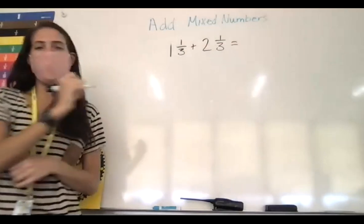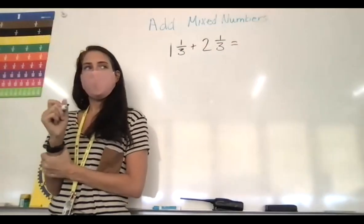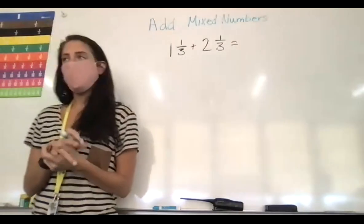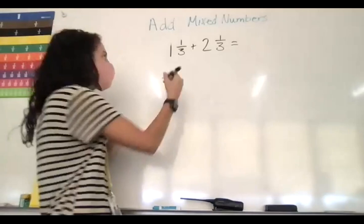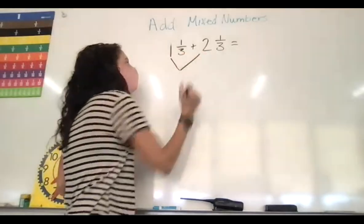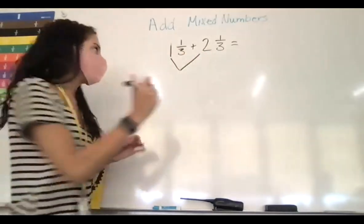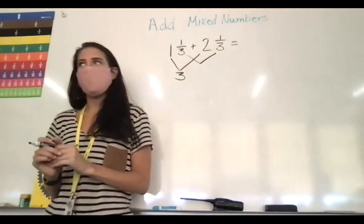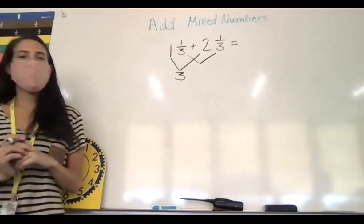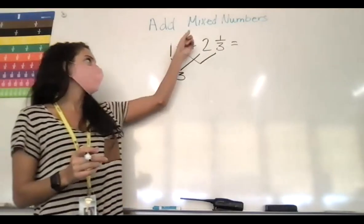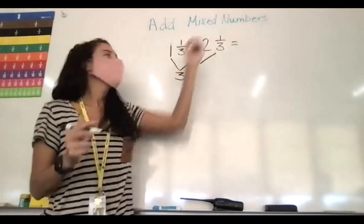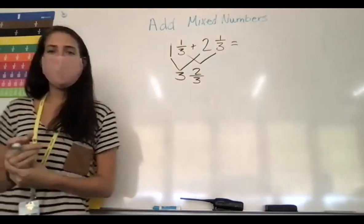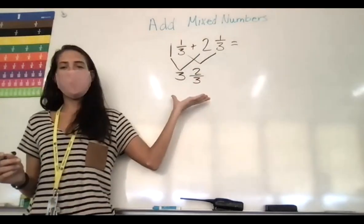We're first going to add our whole numbers. What's 1 plus 2? 3. Then we're going to add our fractions. We have 1 third plus 1 third — what's 1 plus 1? 2. And our denominator stays the same. So right now we have 3 and 2 thirds.